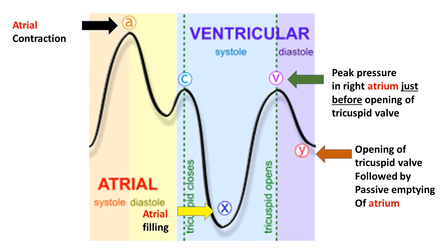Before explaining the waveforms of the jugular venous pulse, let me explain the activities of the atrium in a real-time sequence. Let me start from the phase of atrial contraction, also called atrial kick, which is the last part of the atrial systole. Following atrial contraction, which is the later part of the atrial systole, there is no blood which is significantly present in the atrium.